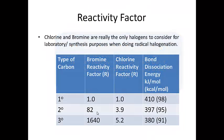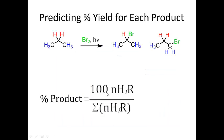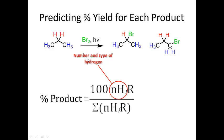We need one more piece of information: a formula to determine the percentage of each product. Here's propane being brominated through radical substitution. The two products have bromine on the secondary carbon and bromine on a primary carbon. The formula uses N_H — the number and type of hydrogen — times the reactivity factor R in the numerator, divided by the sum of N_H times R for each type of hydrogen in the denominator.